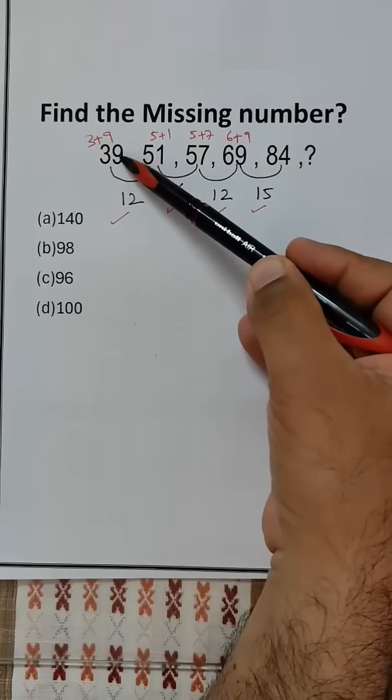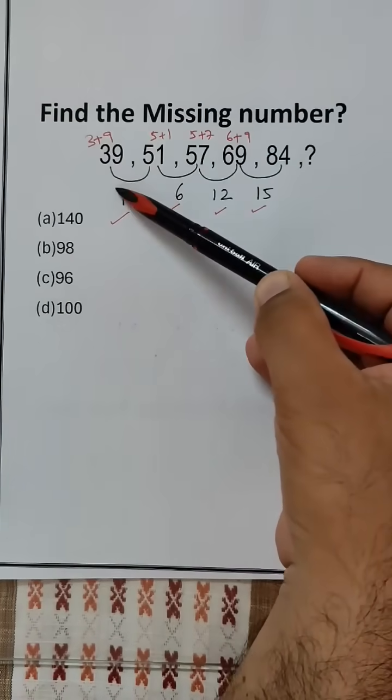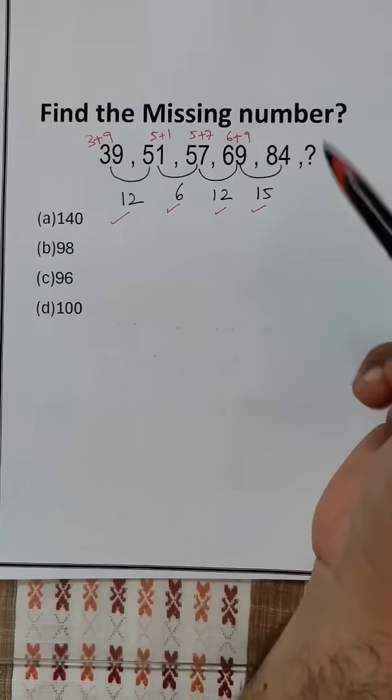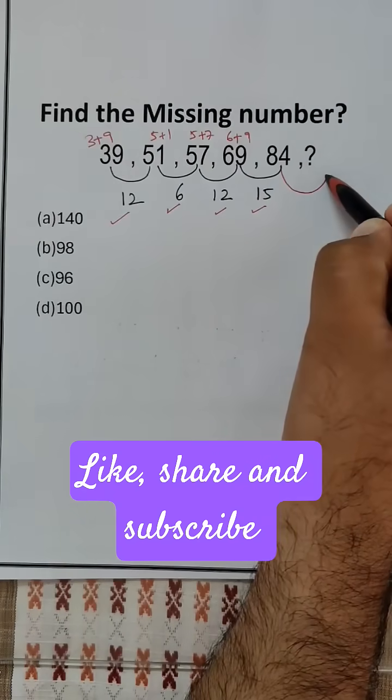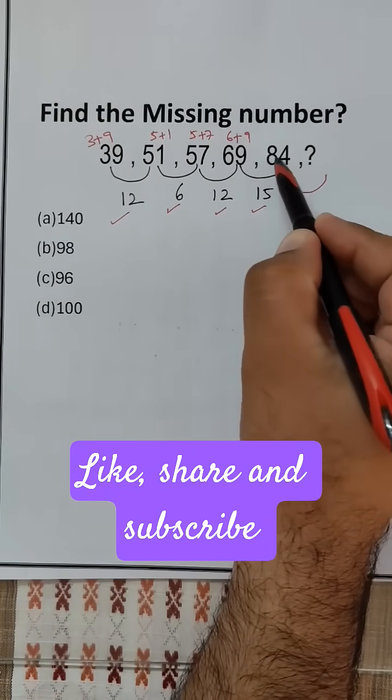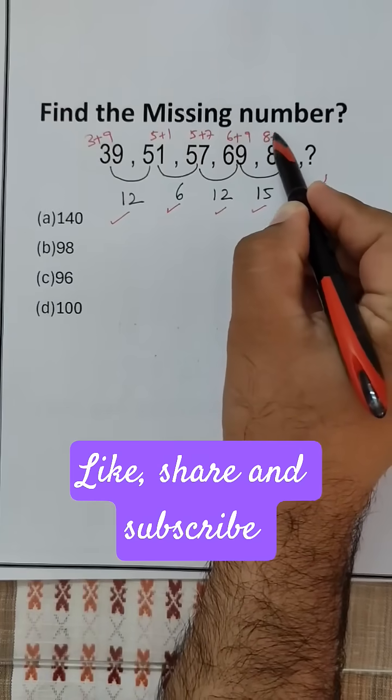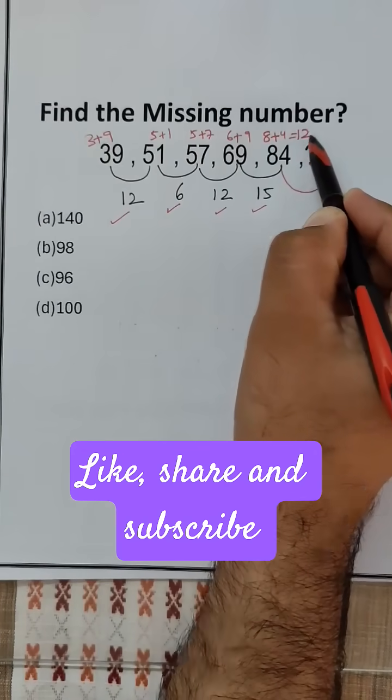The sum of digits is equal to the difference between the terms. So the next difference will be the sum of digits of 84, that is 8 plus 4, which equals 12.